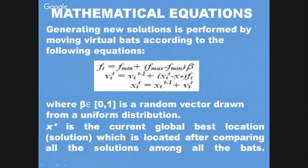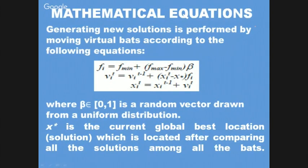The equations involved are five, matching the five parameters. These are frequency, velocity, and position variables, which are updated for every iteration and every position change of the bat. Frequency has a maximum and minimum value — the current frequency is given by the minimum value, plus the difference of minimum and maximum (the range) multiplied by a random vector β in [0,1] for uniform distribution.